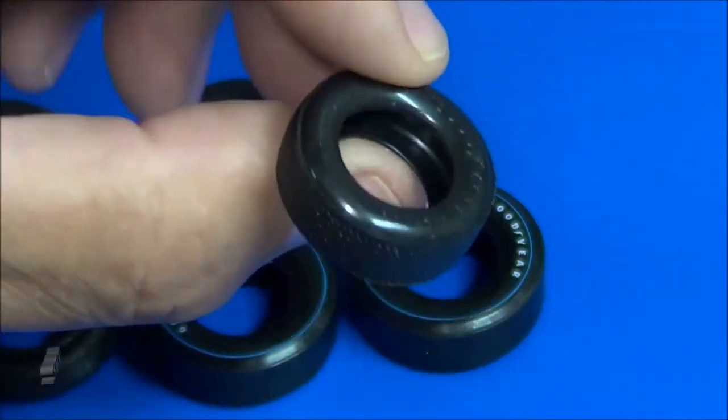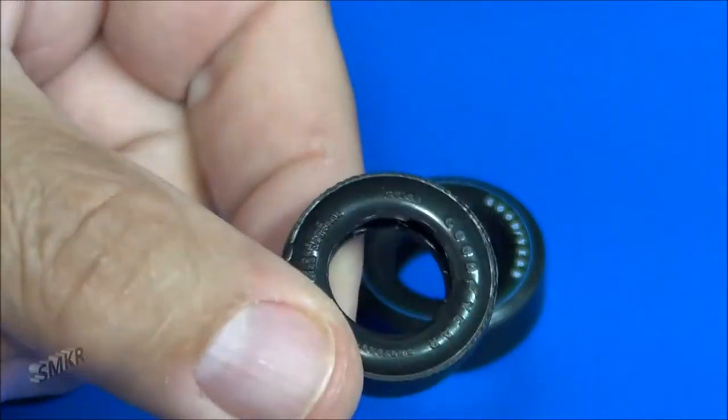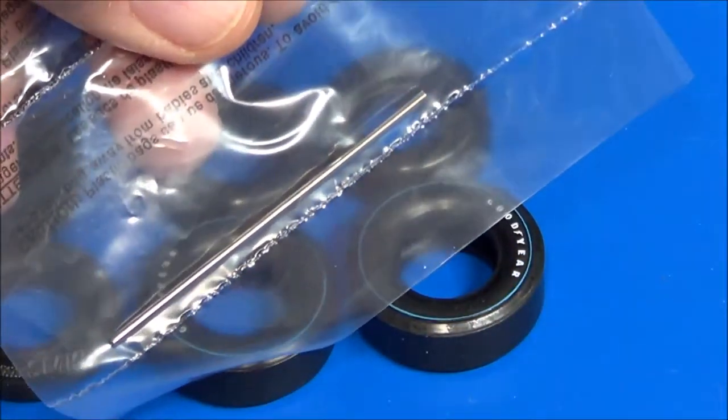They don't have any stripes on them, but they do have the Goodyear on them. Also included is a metal axle shaft.